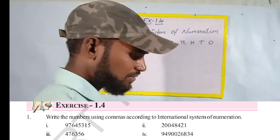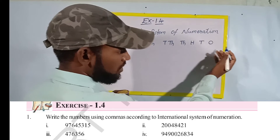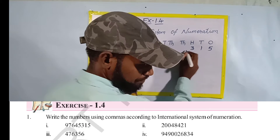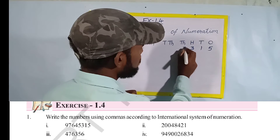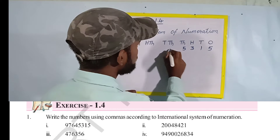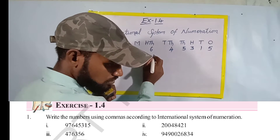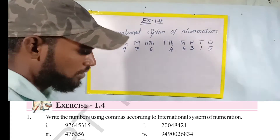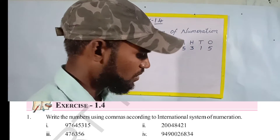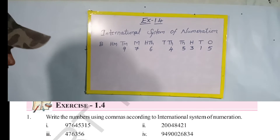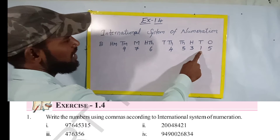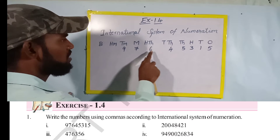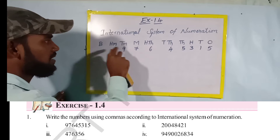What is the first number given? Reading from right to left: five, one, three, five, four, six, then one, seven, nine. So the digits are: 9, 7, 6, 4, 5, 3, 1, 5. Now read the number — ones, tens, hundreds, thousands, ten thousands, hundred thousands, millions, ten millions.